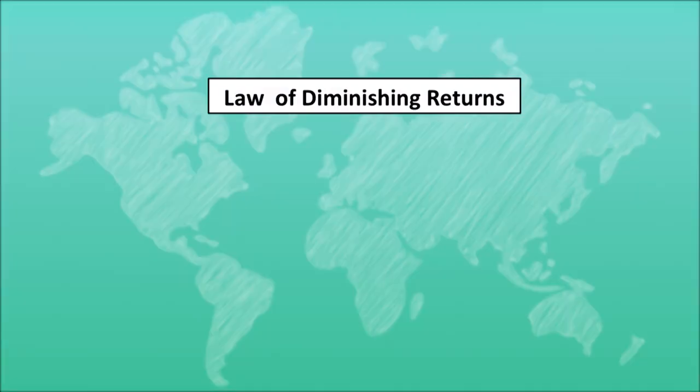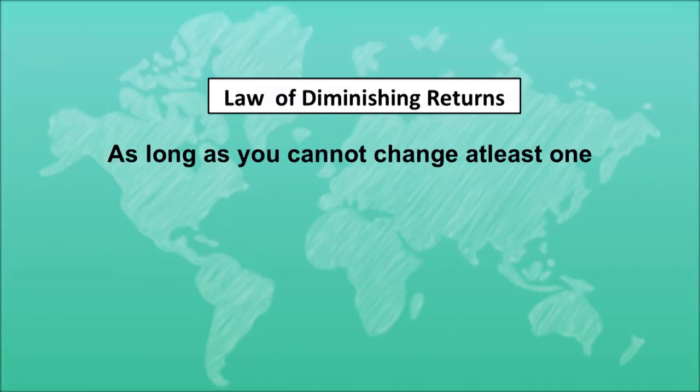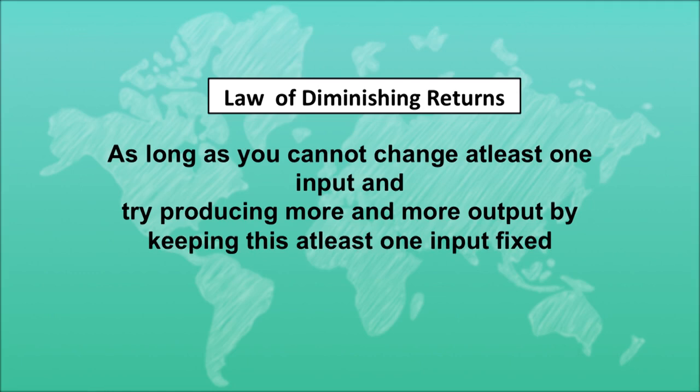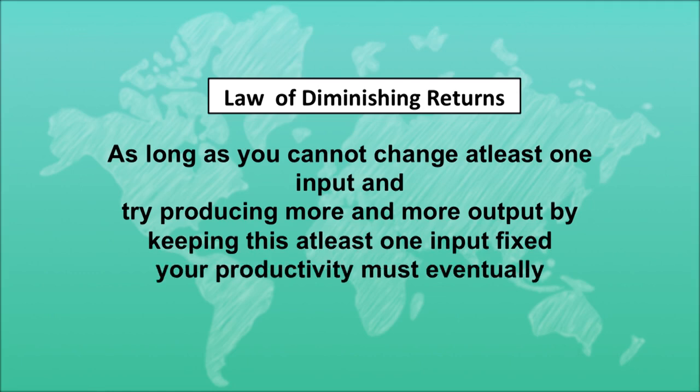Anything which is not the long run must be a short run. There is no specific definition of a short run or a long run. The short run is defined in opposition to what is a long run. So the law of diminishing returns says: as long as you cannot change at least one input, as you try to produce more and more output by keeping at least this one input fixed, your productivity must eventually decline.